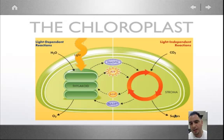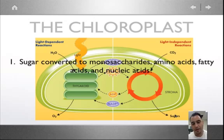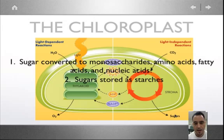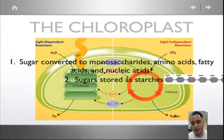So the chloroplast really makes not only just food for itself, but also makes all those other building blocks, those molecules of life that the plant needs to grow and to reproduce and to survive. So what happens to the sugar? They're converted to monosaccharides, amino acids, fatty acids, and nucleic acids. Sometimes if there's a lot of sugar, it is stored as starches, which are those polysaccharides.